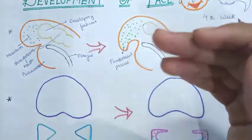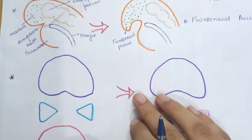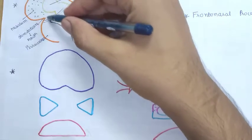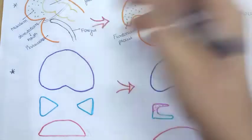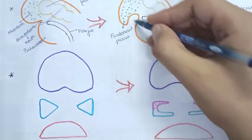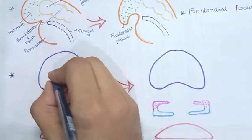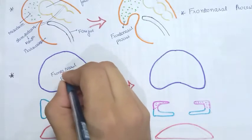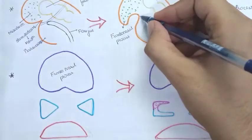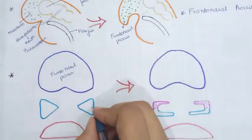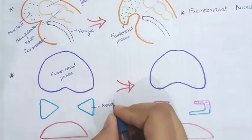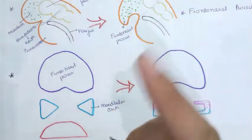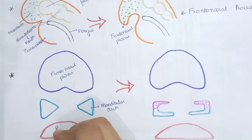Let us look at a diagram to develop our concept of face development. In this diagram we have made a cross-section. We can identify the frontonasal process, the mandibular arch — which is the first pharyngeal arch — and the future pericardium region.